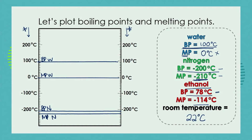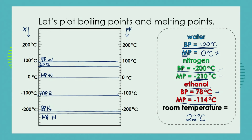Ethanol has a boiling point of 78 degrees C and a melting point at just below minus 100 degrees C. Room temperature sits at approximately 22 degrees C on our graph. We can see very clearly that different substances have different melting points and boiling points.